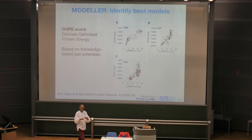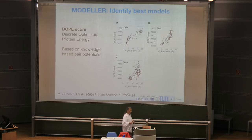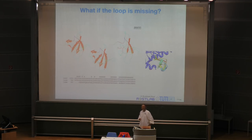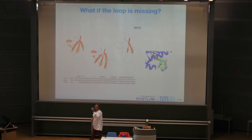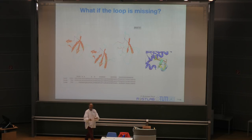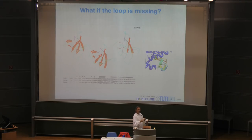Another issue is insertions: I copied five coordinates, but my query protein has seven residues — two additional ones. How can I model that loop, the connecting bit, for those extra residues?